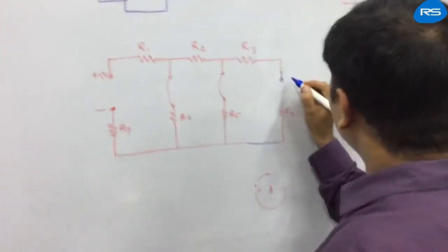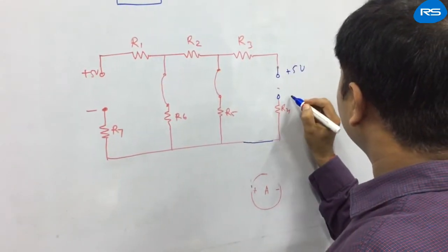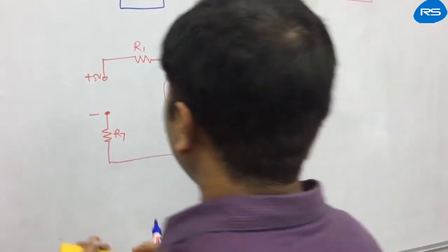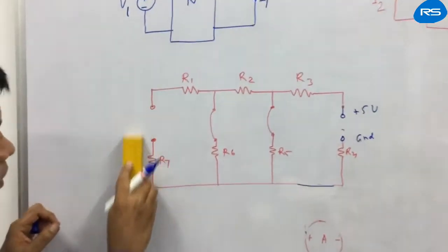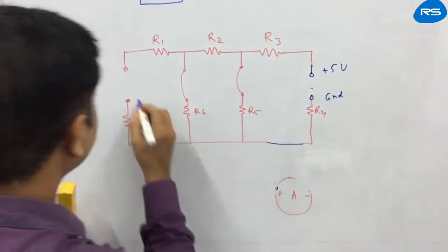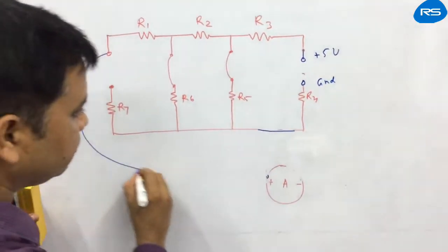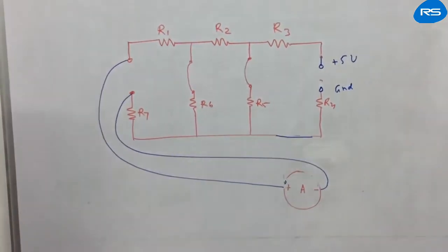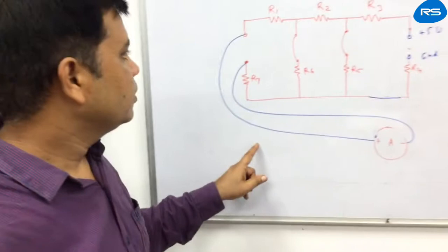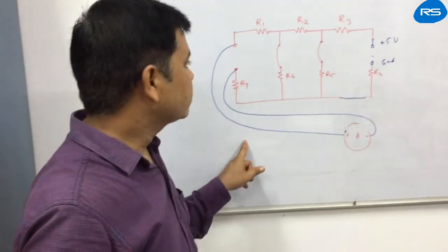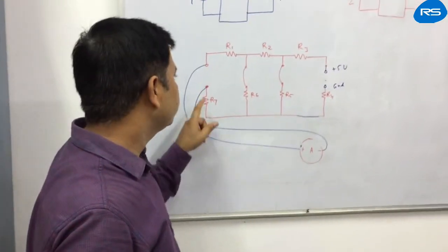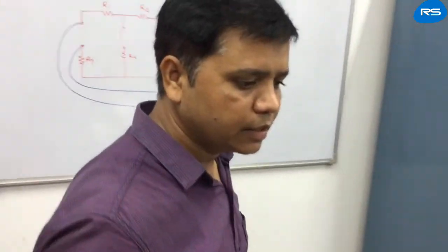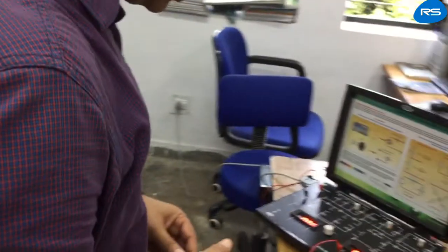We will connect plus 5 volt power supply over here. The negative terminal will be connected, and in this case we will get the same amount of current going through these terminals. So we will verify these things on the kit. Let us see how it is happening.